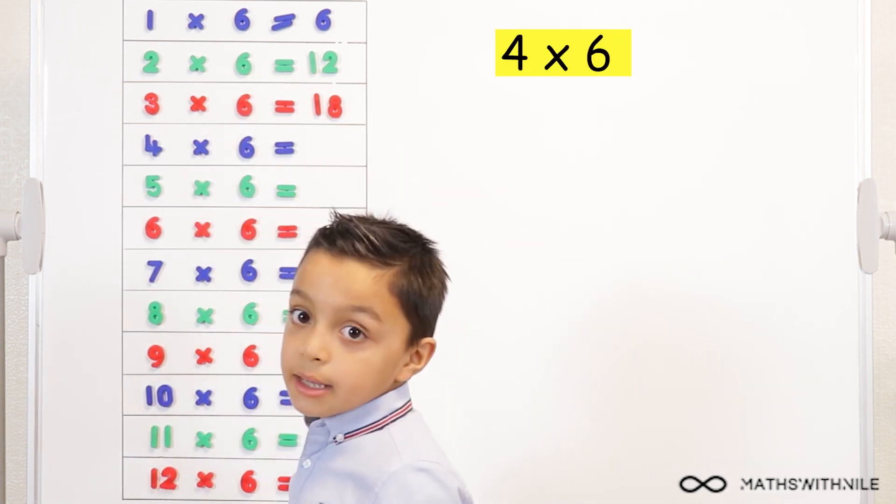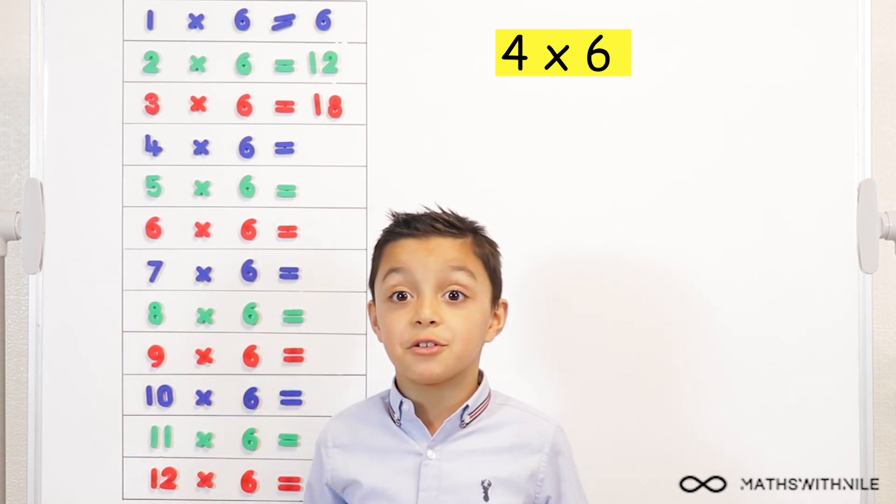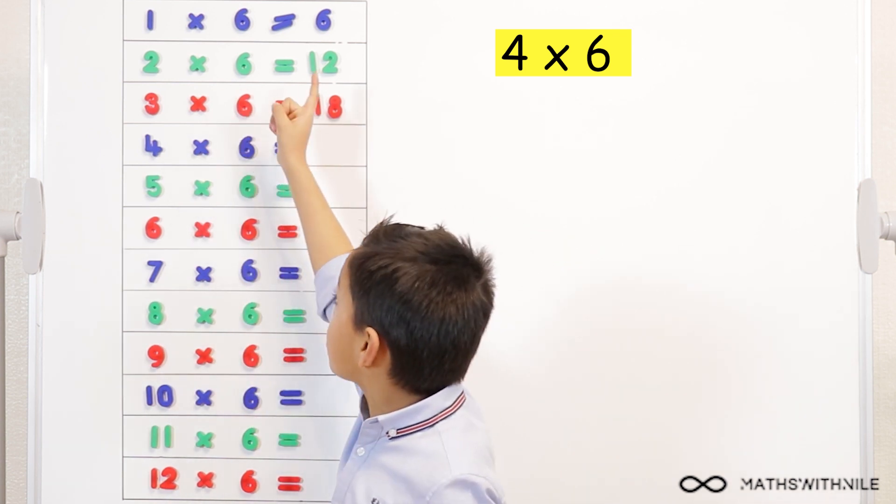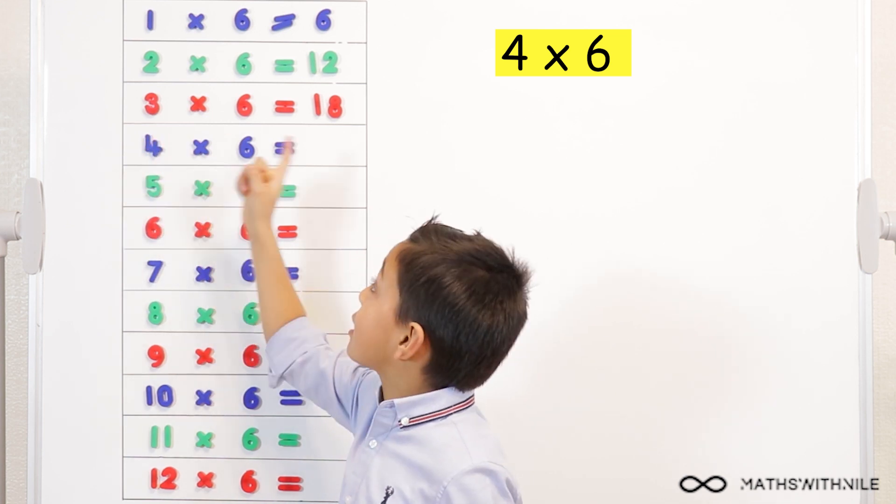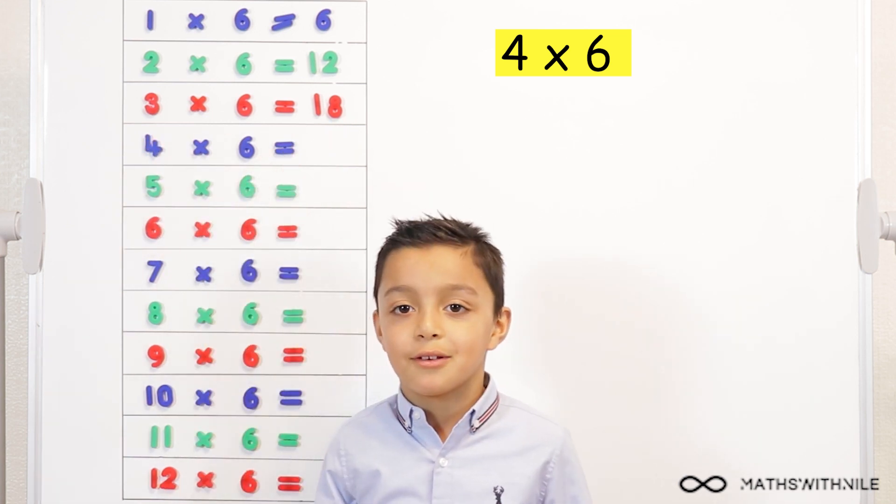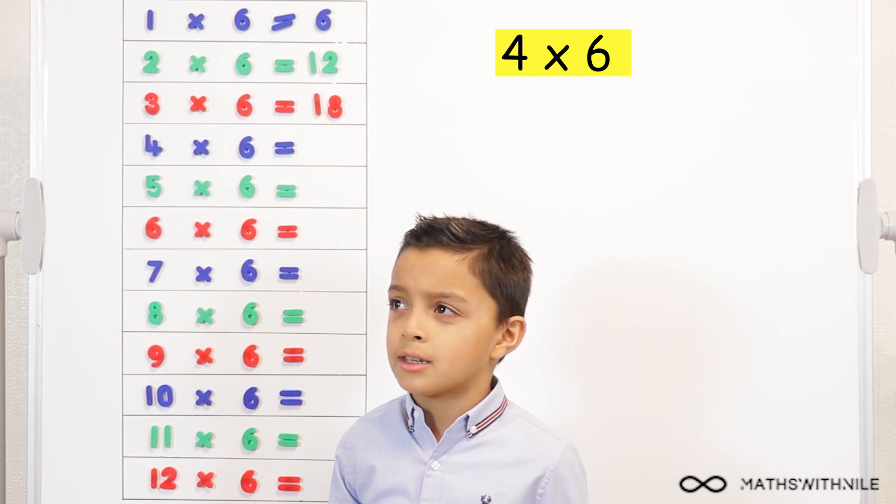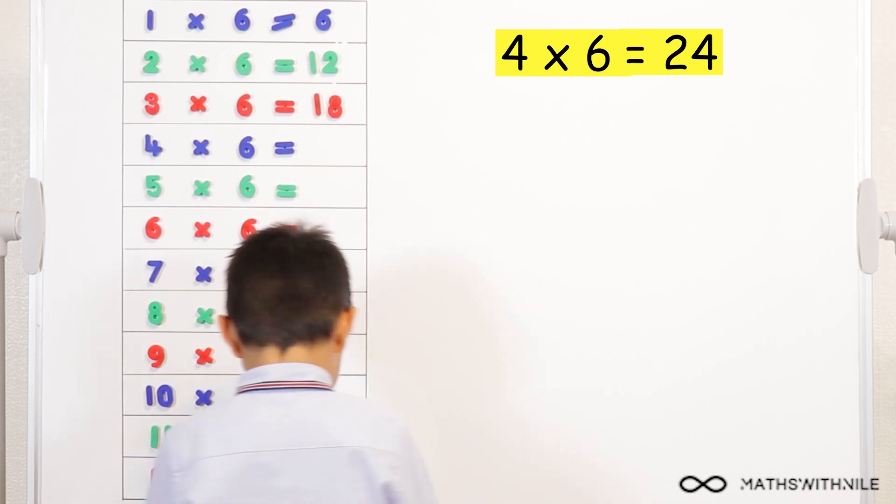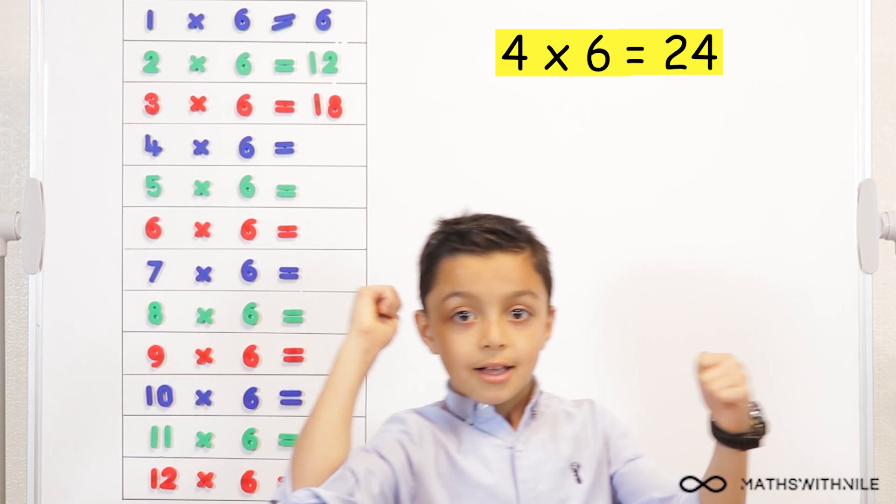Four times six. I got a method to do this. We could double the twelve because if that's two times six and double two equals four, that means we could double twelve. And what would you get if you double twelve? Double two equals four and then double ten equals twenty. So, twenty-four. Okay, so you think it's twenty-four.